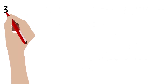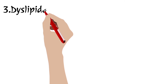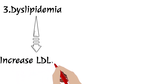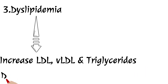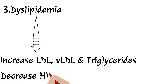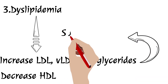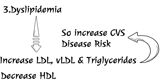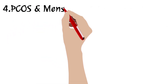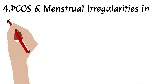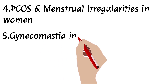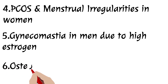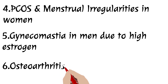The third complication is dyslipidemia — an increase in bad cholesterol (LDL, VLDL, and triglycerides) with decreased good cholesterol (HDL). This increases the risk of cardiovascular diseases, particularly myocardial infarction and brain stroke. The fourth complication is polycystic ovarian syndrome and menstrual irregularity in women. In men, there can be development of gynecomastia due to high estrogen levels.